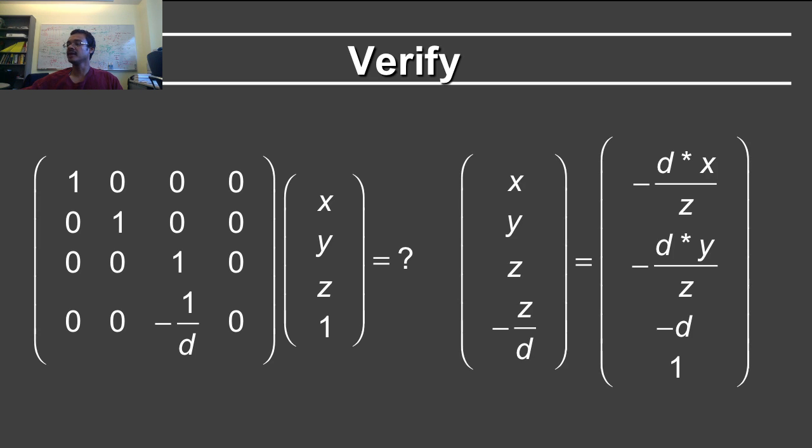You can do this formula, and it's x, y, z, minus z by d. If you multiply it out, you will get d times x by z, d times y by z, minus d, and 1. And in fact, this is exactly what you want to do in order to get perspective projection working.